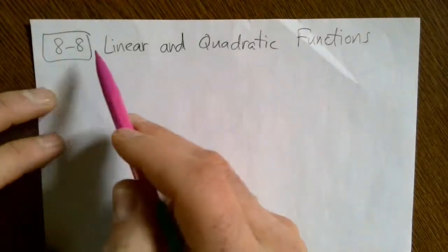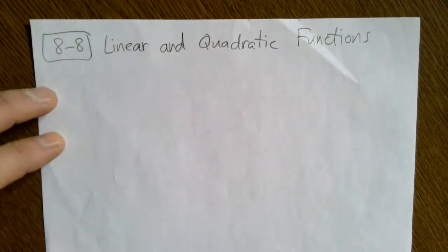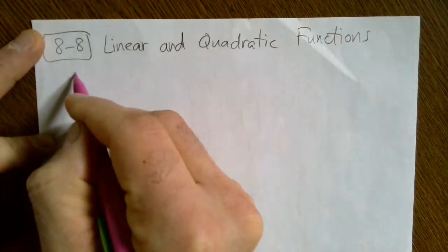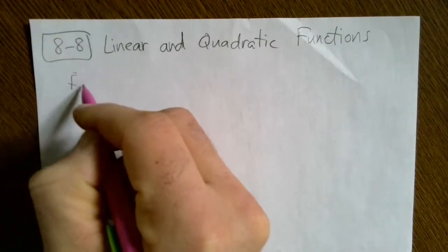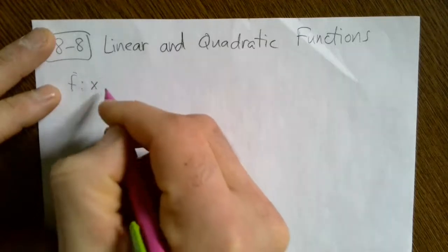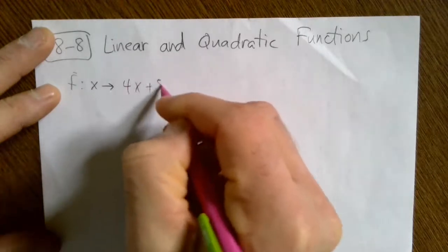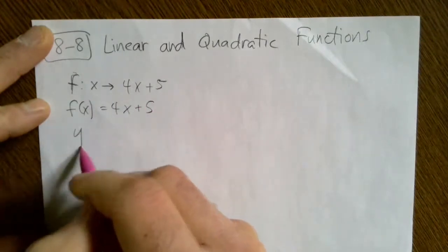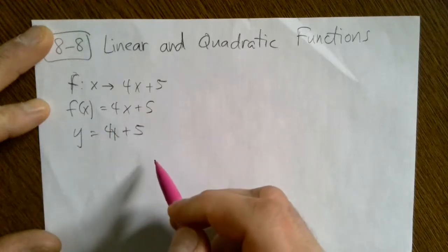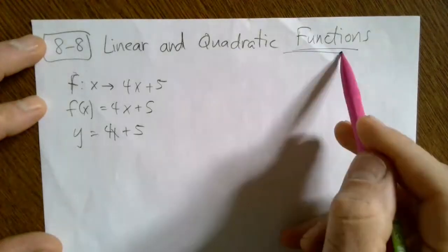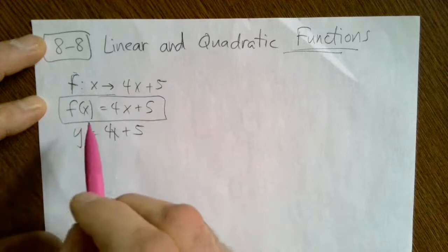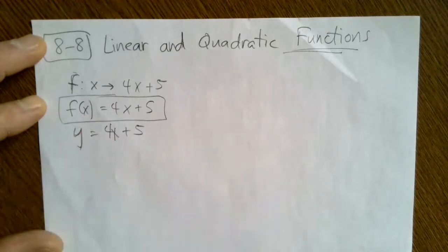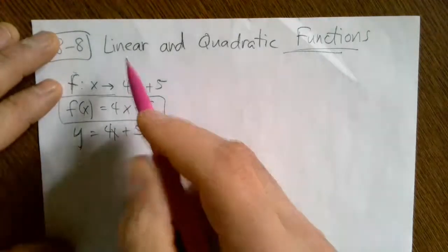We are on lesson 8 of chapter 8: linear and quadratic functions. Let's review — you can set up a function using arrow notation like this: the function f mapped to 4x plus 5. Or you can use function notation, or y equals. All three of these mean the exact same thing. We're focusing on function notation, but remember that arrow notation and y= all mean the same thing. f(x) is just the y.